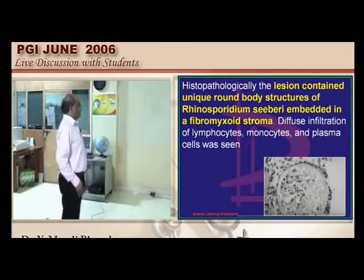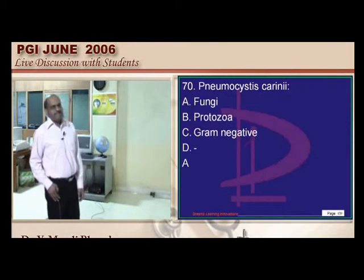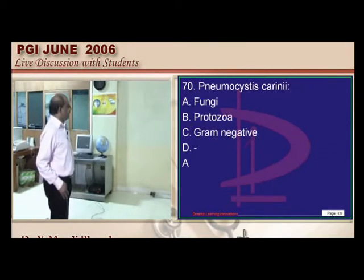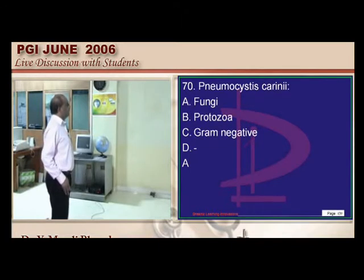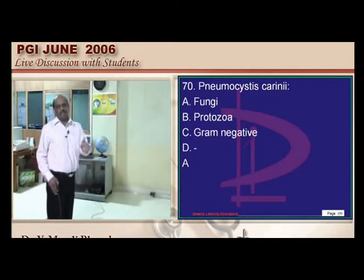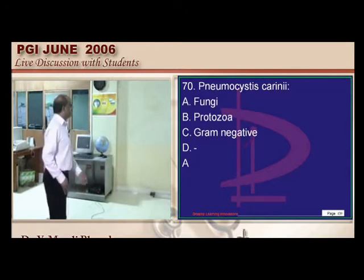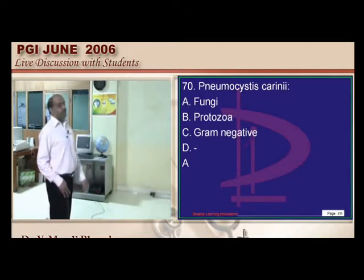Pneumocystis carinii is a fungus and is gram positive — though there has been ongoing debate about whether it is a fungus or protozoan.